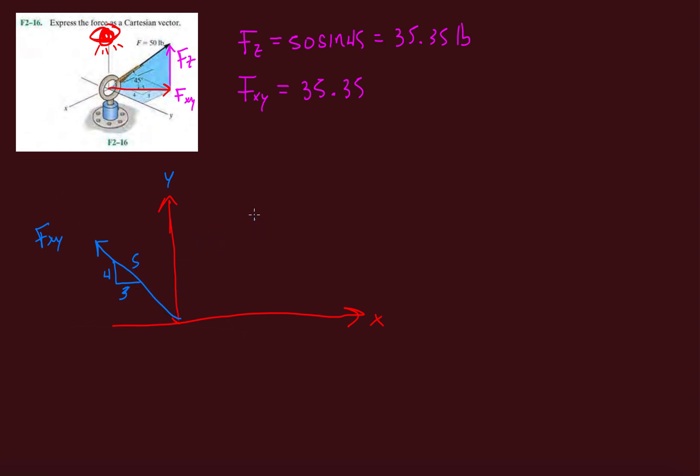All right? And now I can easily just do my fx and my fxy. Sorry, on my fy. So it's 35.35. So let's do magnitude on both. And in the y direction, we're going to do 4 over 5.